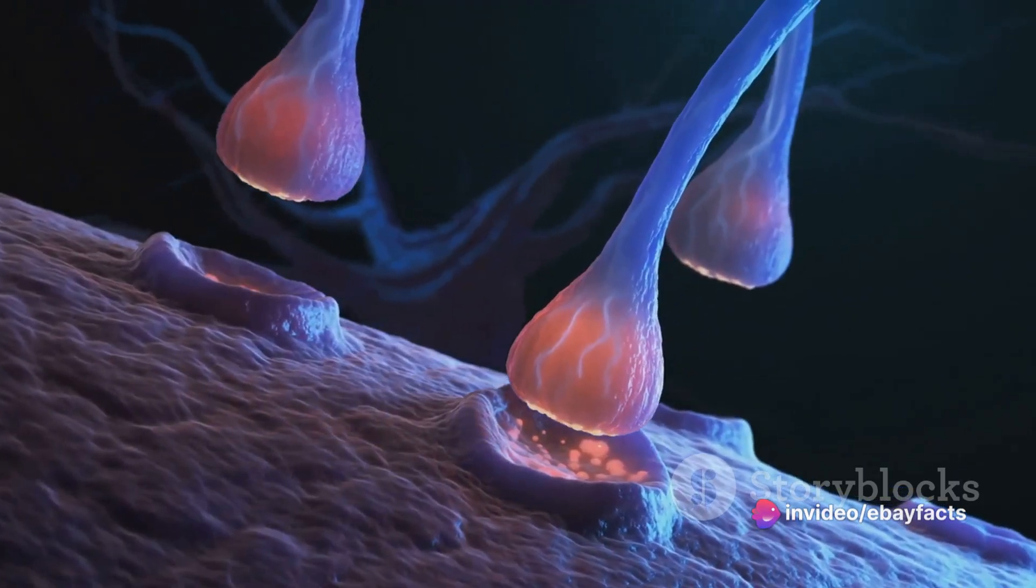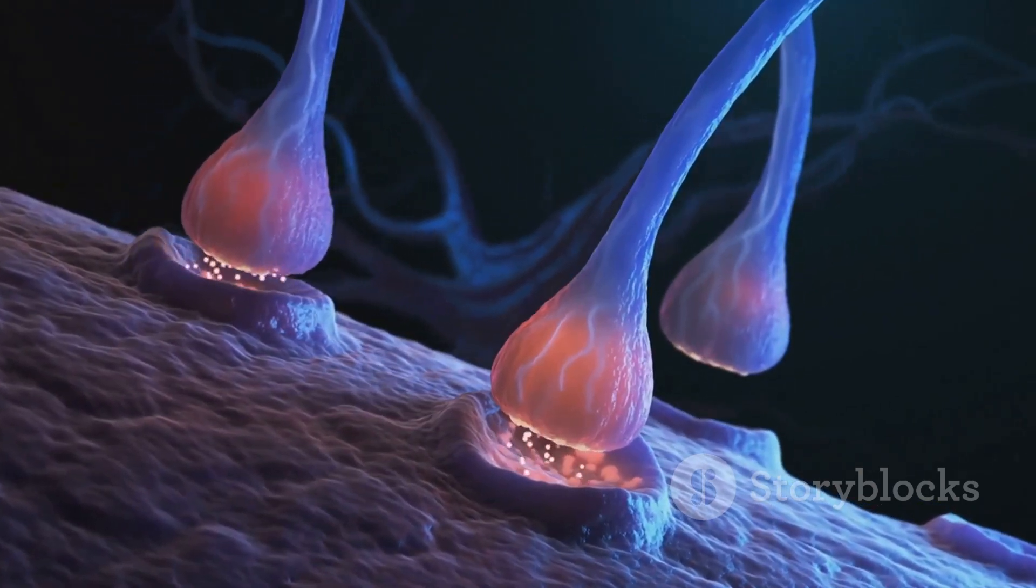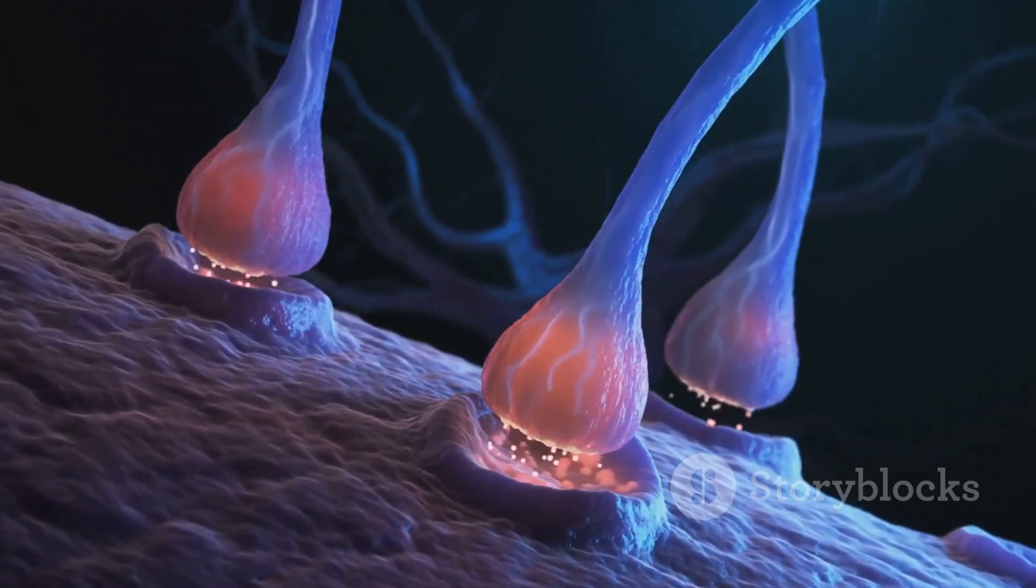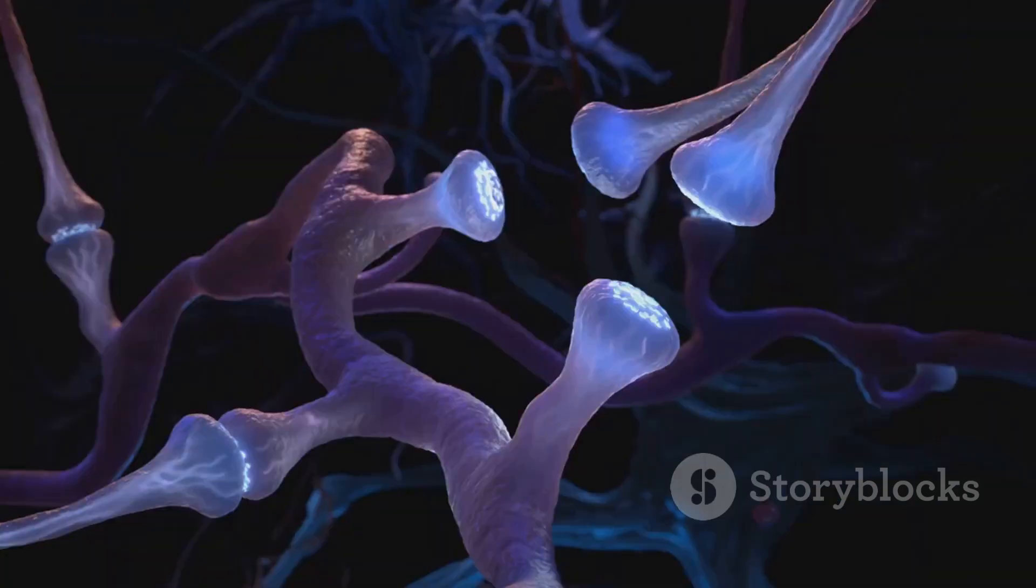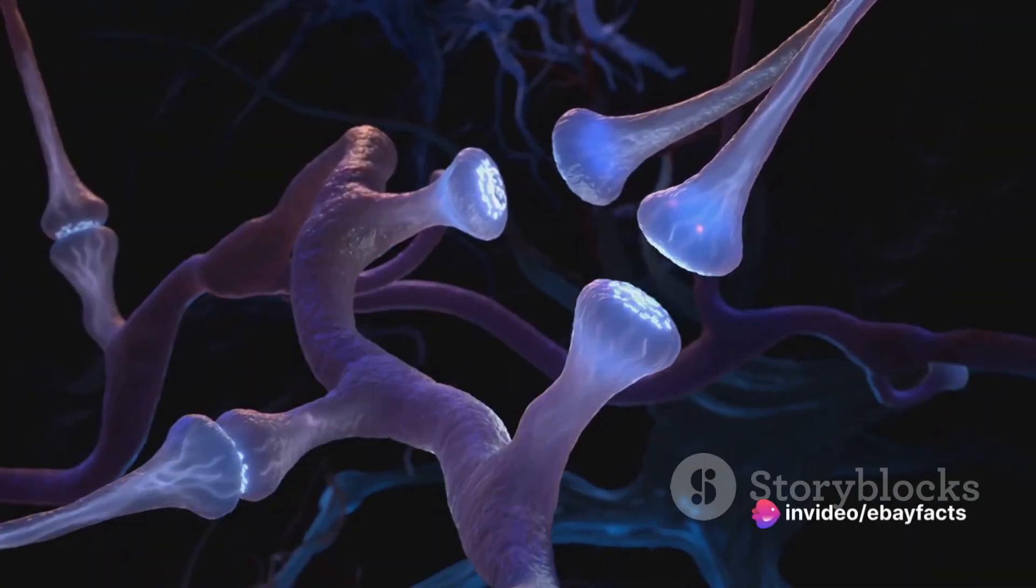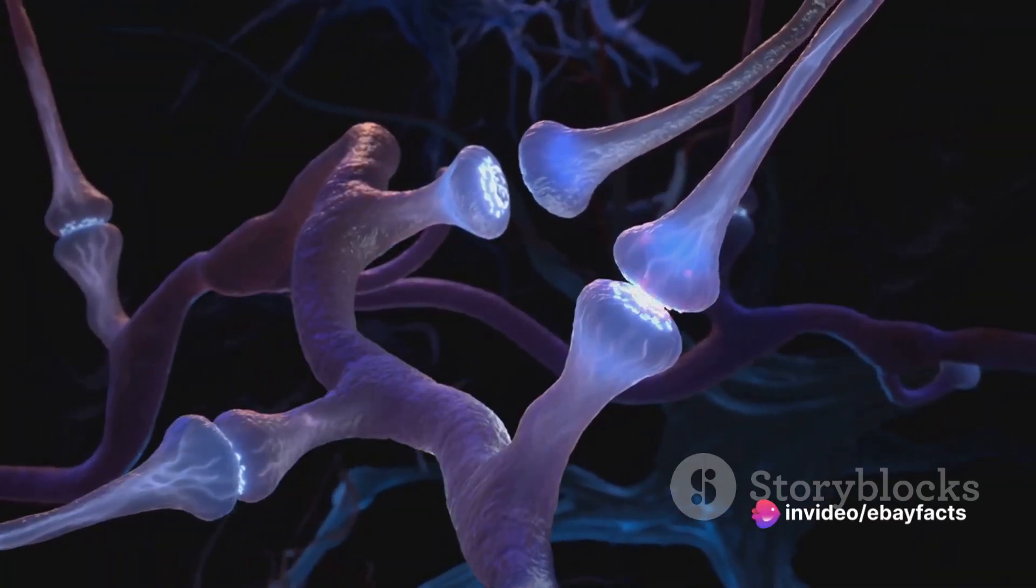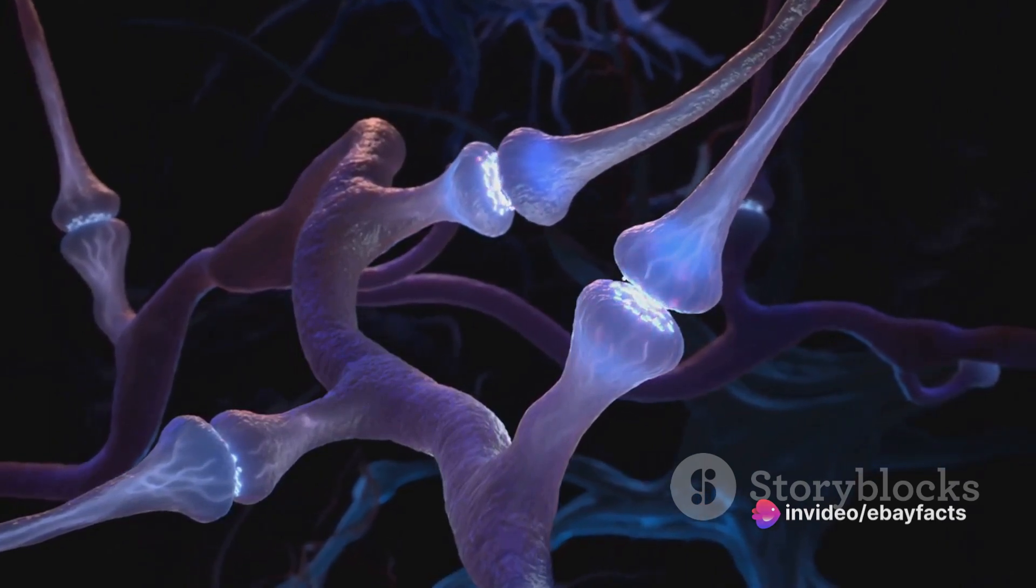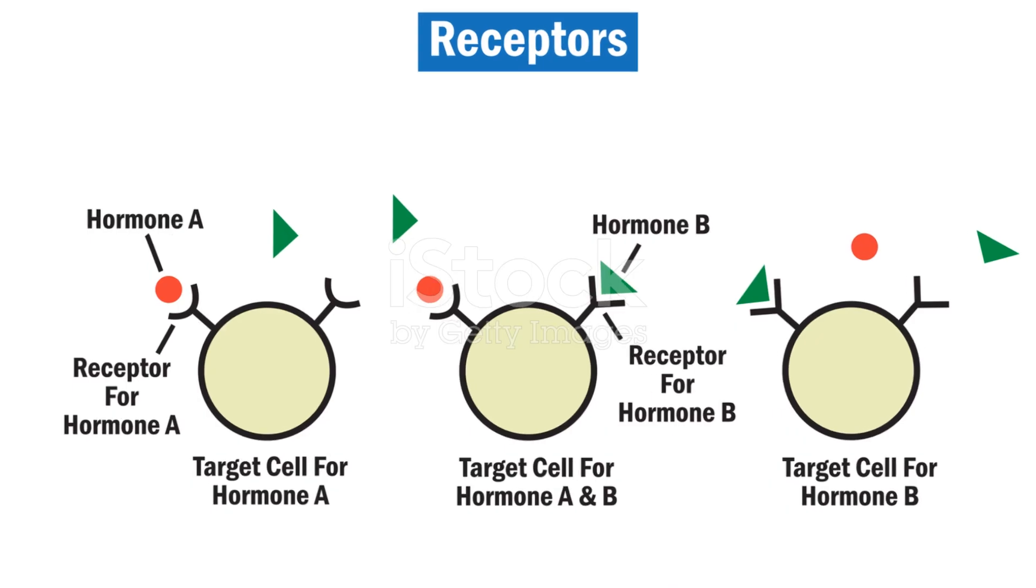After binding, the receptor undergoes conformational changes that transmit signals to the interior of the cell. This process is referred to as signal transduction. The signal is then relayed through various intracellular pathways, leading to cellular responses.